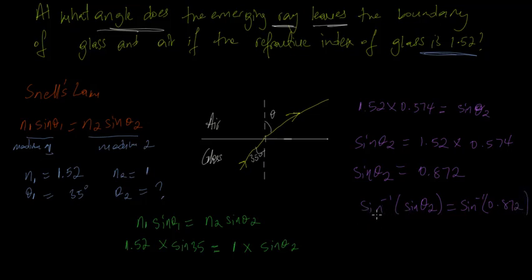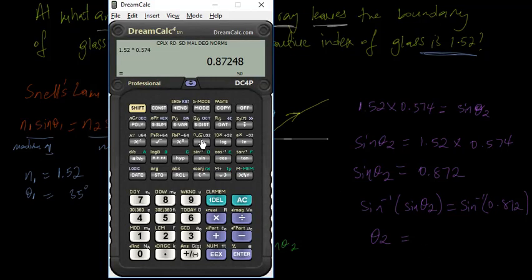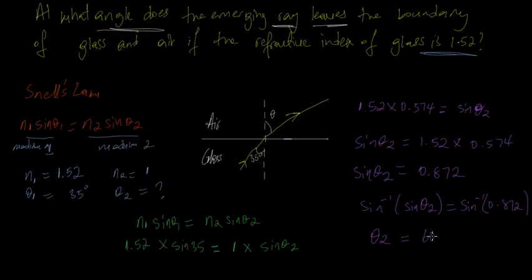Now when we take the inverse sine of sin θ₂, we'll end up with simply θ₂, and then we'll take the inverse sine of this. We'll have to get out our calculator. So I'll say shift sine of 0.872, and that works out to be 60.69, so let's say 60.7 degrees.